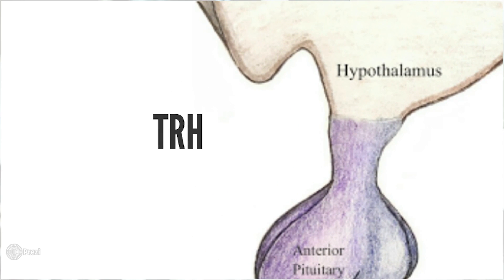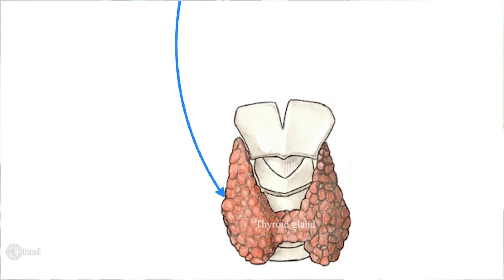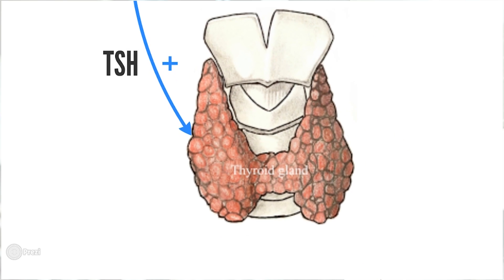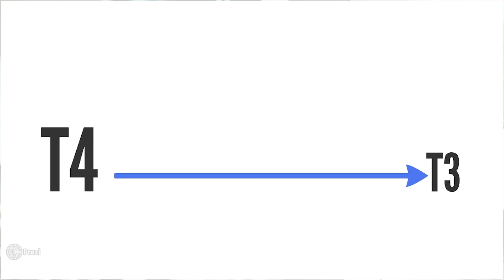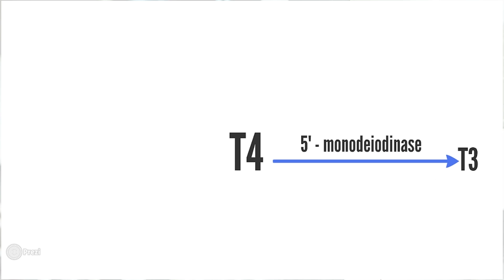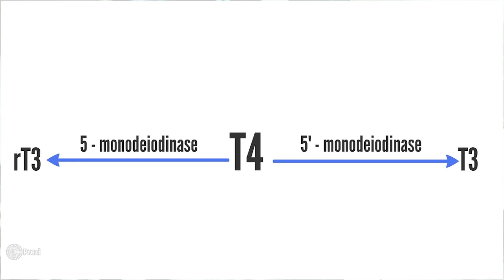Before we talk about abnormal, let's relearn normal. The hypothalamus secretes thyroid-releasing hormone, stimulating the anterior pituitary to secrete thyroid-stimulating hormone. TSH triggers the thyroid gland to release T4 and T3. T4 and T3 then have negative feedback on both the anterior pituitary and hypothalamus. T3 is the most metabolically active form of thyroid hormone, but only 20% is released by the thyroid gland. Most of T3 is converted peripherally from T4 by the enzyme 5' monodeiodinase. T4 also is converted to RT3 or reverse T3, which is the inactive form of thyroid hormone.